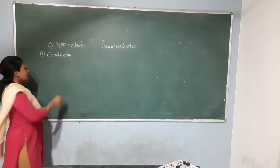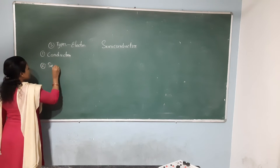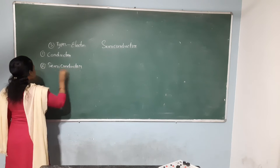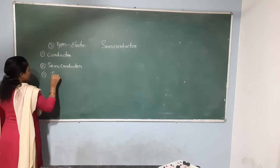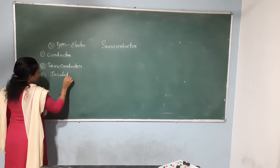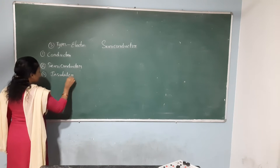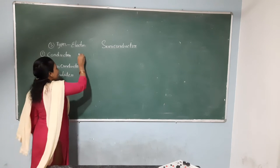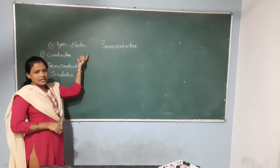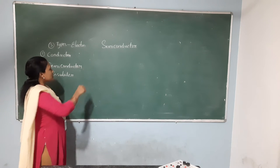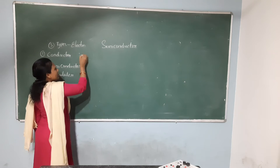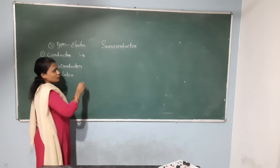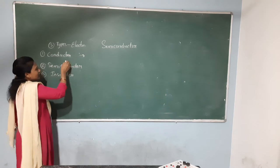Conductor, semiconductor, insulator. What is a conductor? A conductor is a substance in which electrically charged carriers, atoms, move easily through the substance. The flow of electricity is maximum in conductors — flow of electricity is possible in conductors.